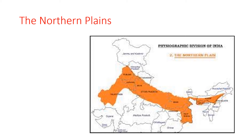The Northern Plains are very fertile plains with rich alluvial soil in most parts. The most important cities in the Northern Plains are Amritsar, Delhi, Agra, Kanpur, Lucknow, Allahabad, Varanasi, Patna, Kolkata, Guwahati, and Chandigarh.